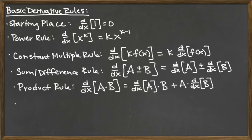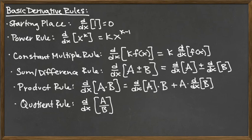And then lastly for our basic derivative rules, we've got the quotient rule. The quotient rule says if we want to take the derivative of a quotient, and again I'm going to use a and b here, what we get itself is a quotient. The denominator of that quotient is the denominator that you start with squared.